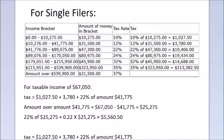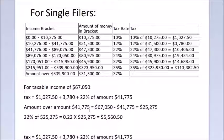The tax is calculated as follows: $1,027.50 plus $3,780, plus 22% of the amount over $41,075. The amount over $41,075 is $67,050 minus $41,075, which is $25,275. Then 22% of $25,275 is 0.22 times $25,275, which comes out to $5,560.50.